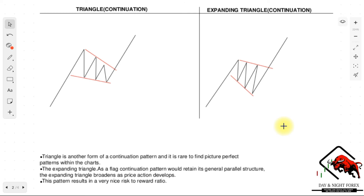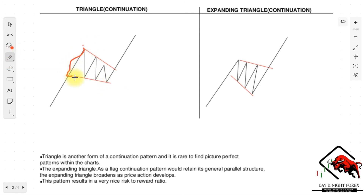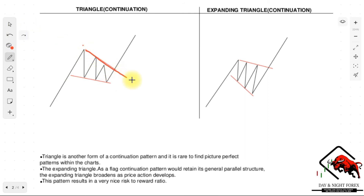Similarly to the flags, the next two patterns are the triangle and the expanding triangle — also continuation patterns, shown here in a bullish context. The first triangle has a bigger base at the bottom, and it forms a triangle shape that gets narrower from where it started. It's similar to a flag, but instead of straight horizontal lines, the lines are coming together, converging to a meeting point and creating a triangle. It doesn't mean the market must continue all the way to the triangle's tip — as long as the triangle formation is visible, it's a confirmed triangle continuation pattern.